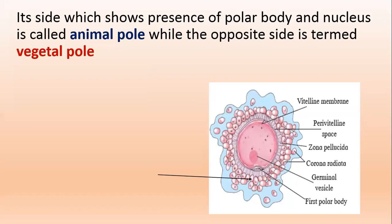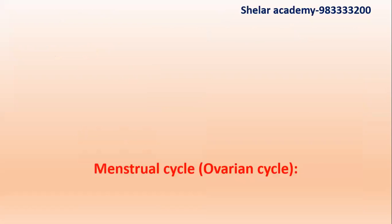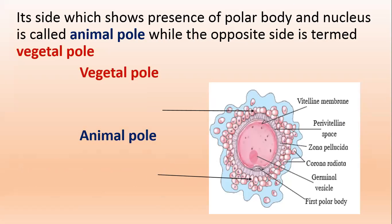So this is the animal pole and the other is the vegetal pole. The animal pole has the first polar body and the germinal vesicle as the nucleus of the animal pole, and the opposite side is the vegetal pole. So this is structure of egg.